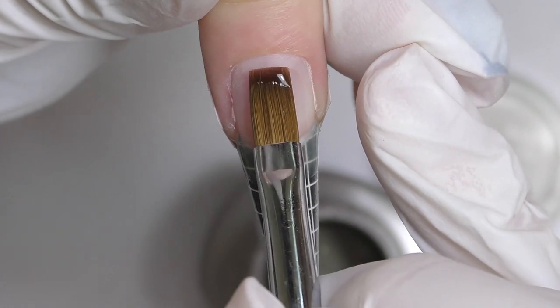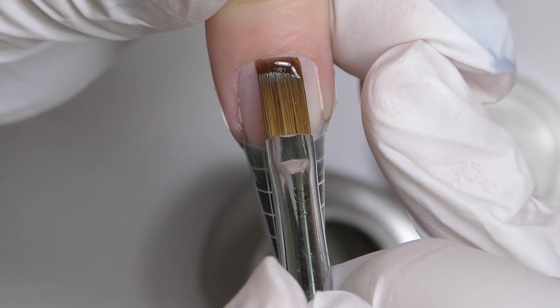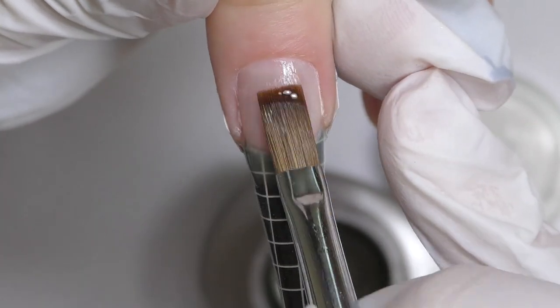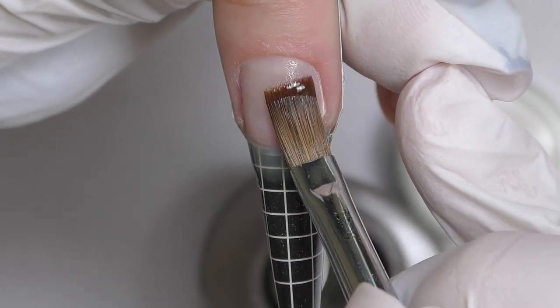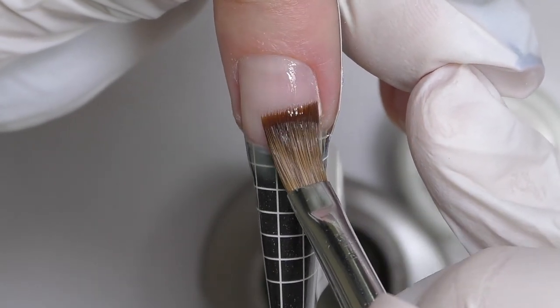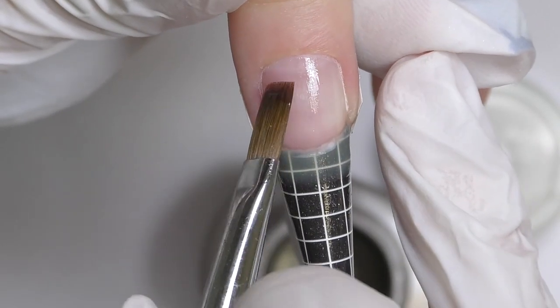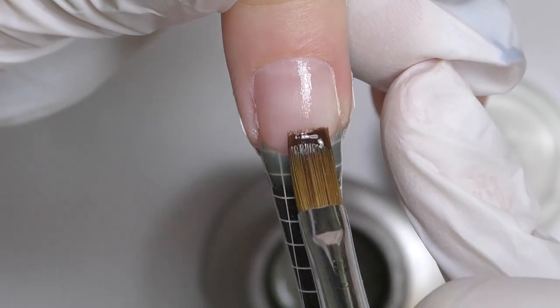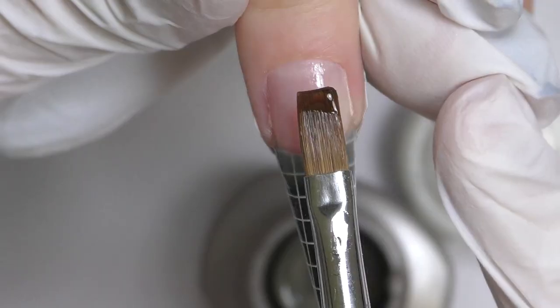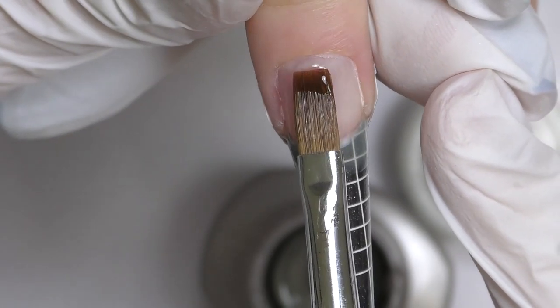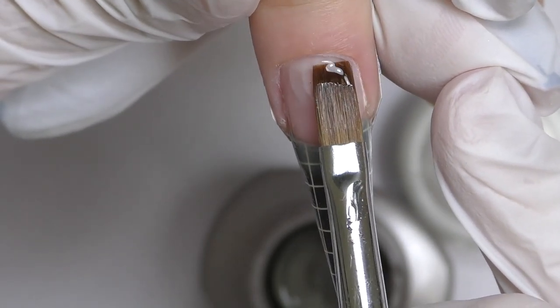Next step is base gel. First, I apply a thin layer all over the nail. And honestly, this is how I usually do my gel application, because if you will make the surface of the nail, including the free edge, slippery, it will be so much easier to apply the gel. Base gel is creating adhesion between the product and the natural nail.